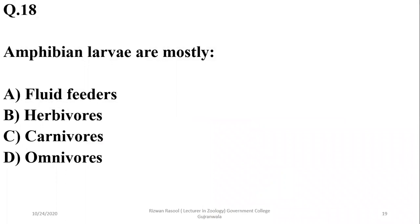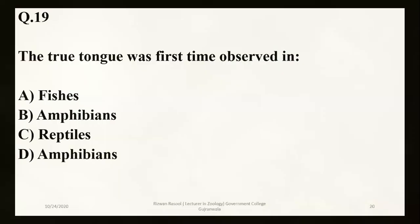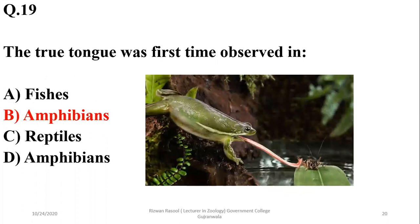Amphibian larvae, which are tadpoles, are mostly herbivores — they get their nutrients from plant material or algae. The true tongue was first observed in amphibians and is actively used for predation, as you can see a frog flipping out its tongue to capture an insect.